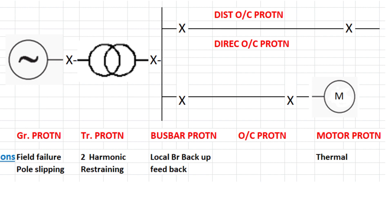Second is transformer protection. In transformer protection, there is second harmonic restraint. When we charge any transformer, it will take a high current initially. This high current contains more second harmonic component compared to the fundamental current. This harmonic would operate your relay during charging of the transformer. To avoid tripping of the transformer during charging, they use the second harmonic to block the operation of the relay. That is called second harmonic restraint.